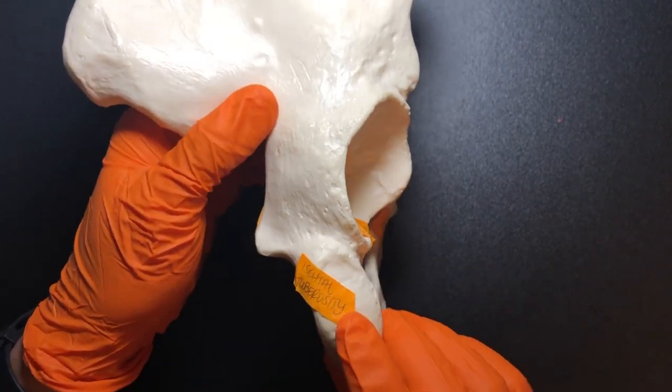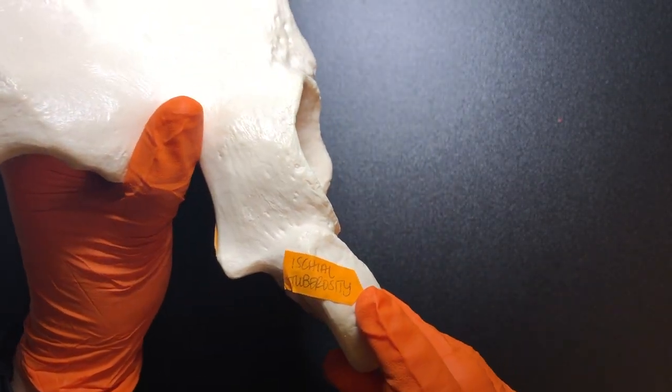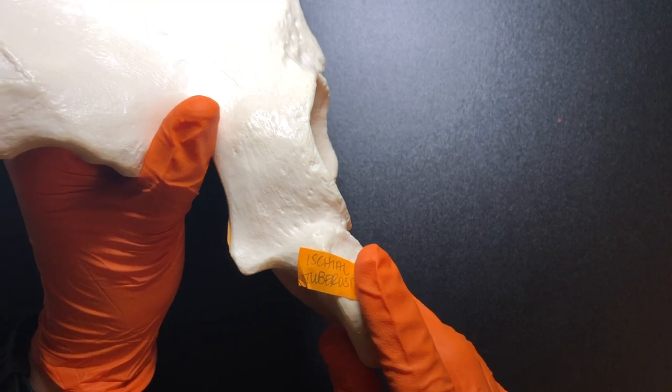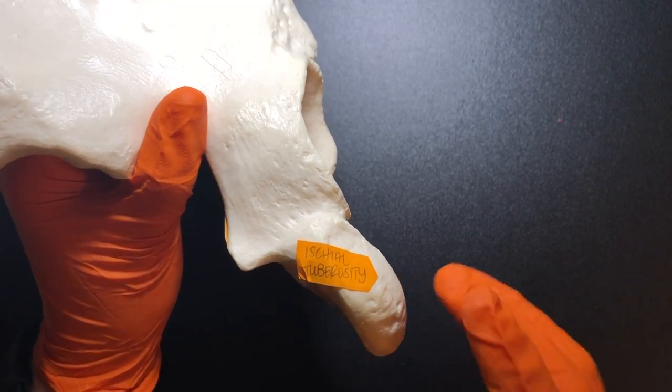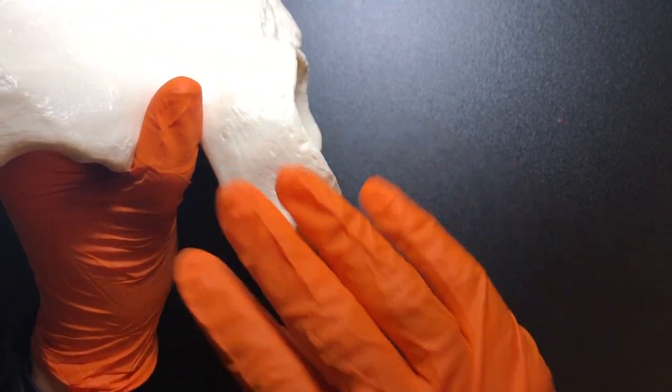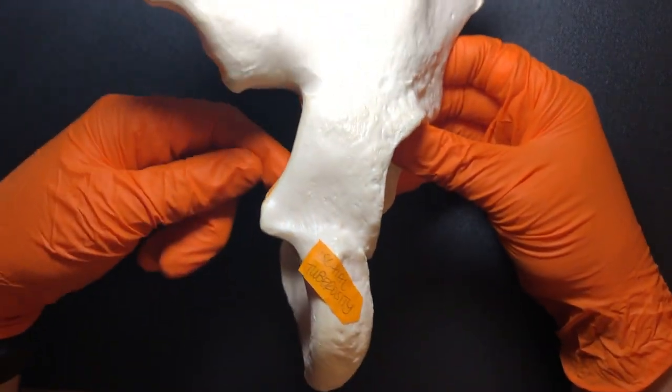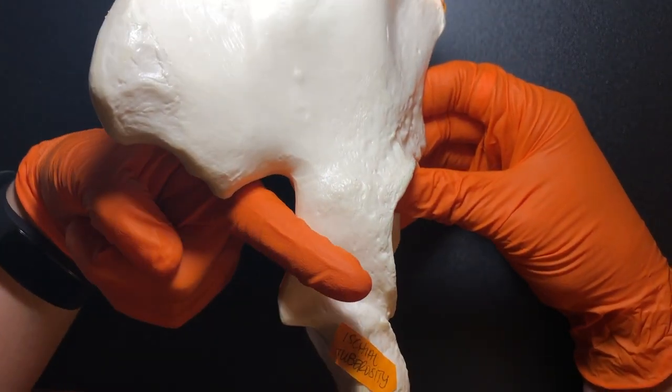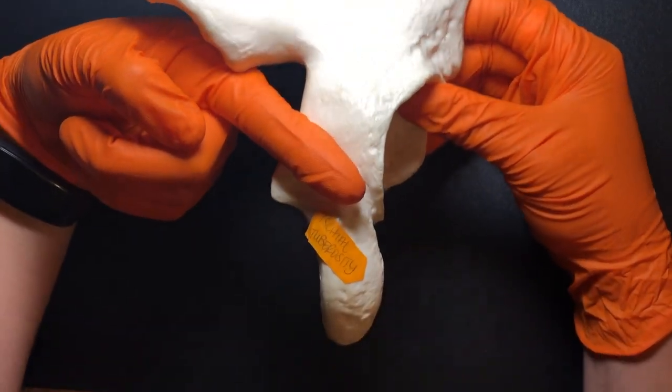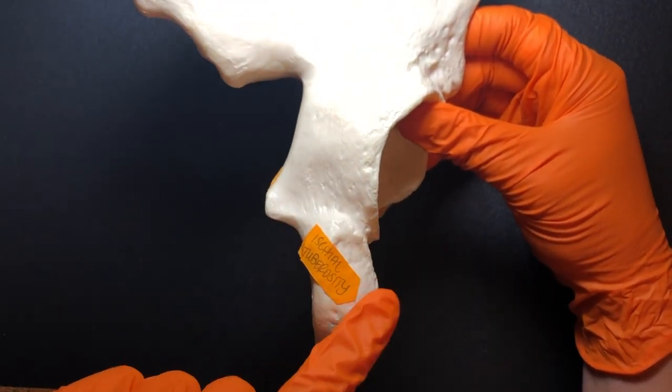If I flip this over, this is actually the ischial tuberosity. And again, a tuberosity is another bony feature that's going to kind of come outwards. In fact, the sciatic notch is going to go through this greater sciatic notch right here and run right alongside this ischial tuberosity.